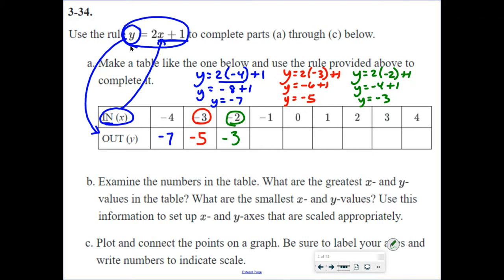Okay, so if you paused and did this work, here's what you should have had. This should have been negative 1. This should have been 1, 3, 5, 7, and 9. So that is the values you should have gotten on your table. Did you? If not, try to figure out where you messed up.